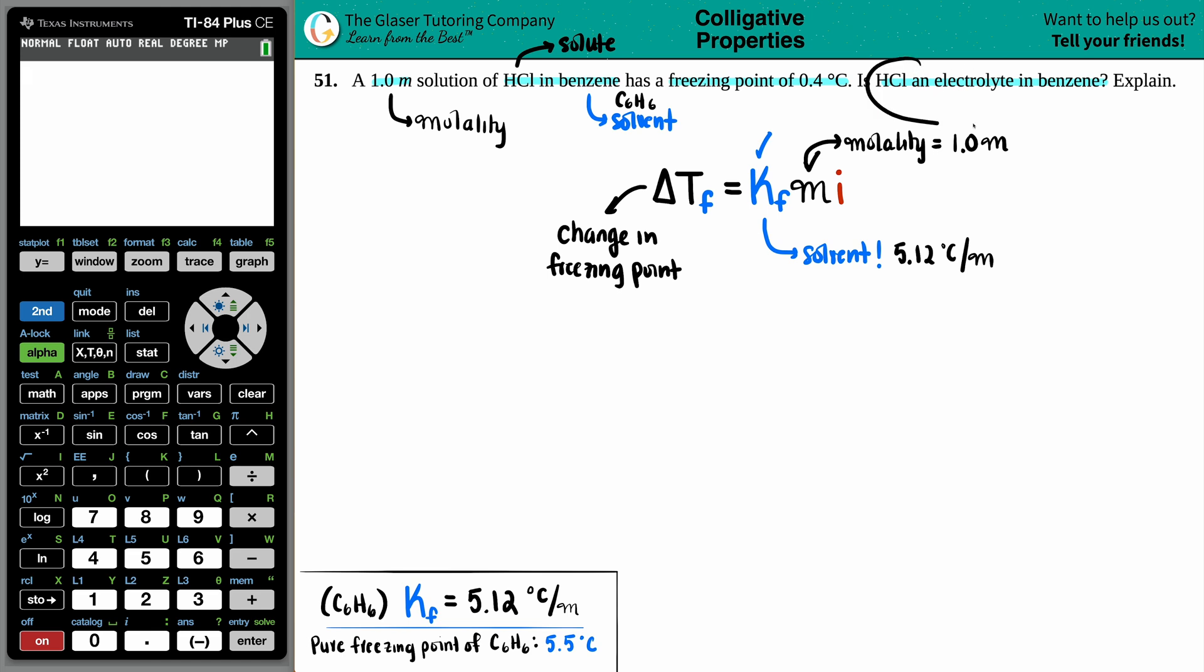They're asking whether HCl is an electrolyte in benzene. If you have an electrolyte, your solute will have an i-value of 2 or more, not 1. Non-electrolytes, substances that don't break down in your solvent, will have an i-value of 1. But if you have an electrolyte, which means your solute will dissolve and dissociate into its ions, in this case H+ and Cl-, if it's going to break down.